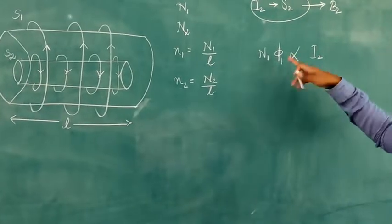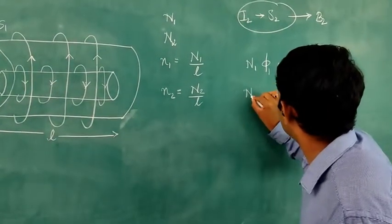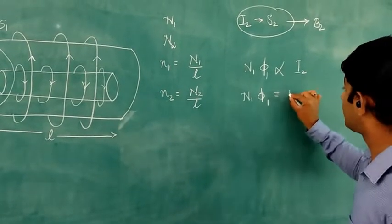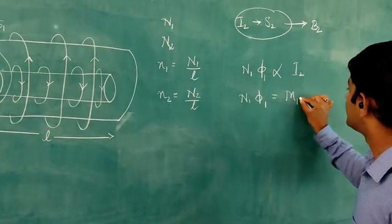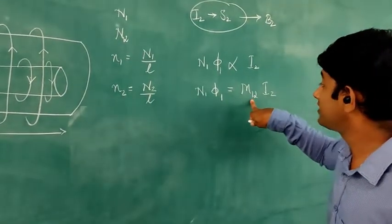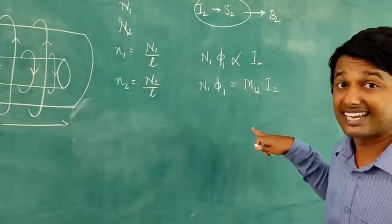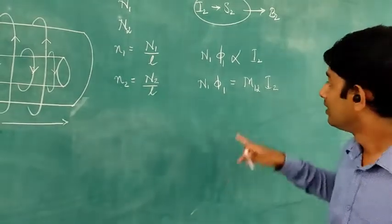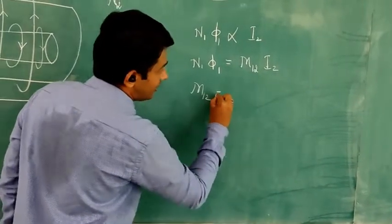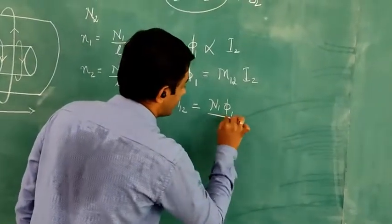Removing the proportionality symbol, N1φ1 equals M12 times I2, where M12 represents the mutual inductance of the first solenoid with respect to the second solenoid. Rearranging, M12 equals N1φ1 divided by I2.